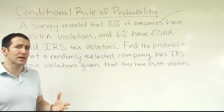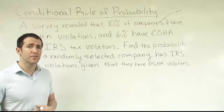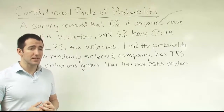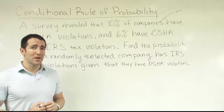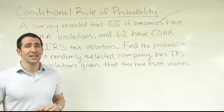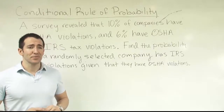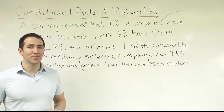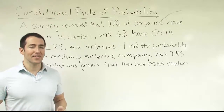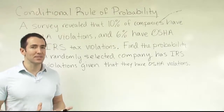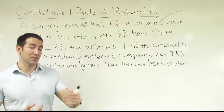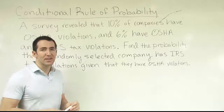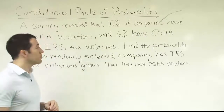Sometimes known information isn't helpful. For example, what's the chance that girl in the top row of the class gets an A given that she wears a size 8 shoe? Shoe size has nothing to do with your ability to get an A in a stats class. So in that case, the extra information isn't helpful and you'd just stick with the original 10%.